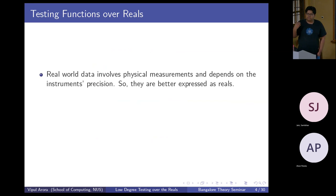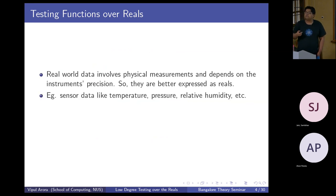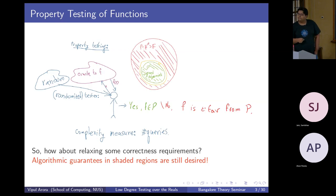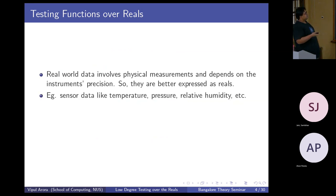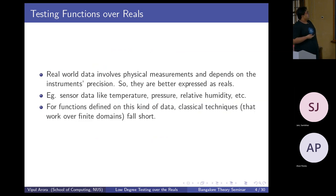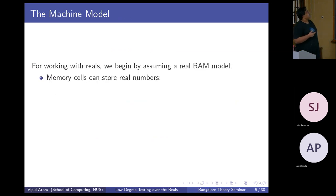Real-world data involves physical measurements with varying precision, so such data is better expressed as reals — infinite precision arithmetic numbers. Examples are temperature, pressure, RH, etc. For functions defined over this kind of data, classical techniques that work over finite domains fall short. We need to come up with something smarter to deal with these problems. Before I delve into the techniques and the result, a word of caution.